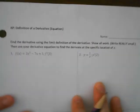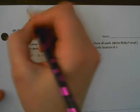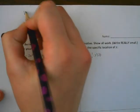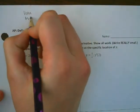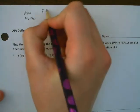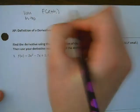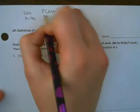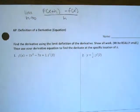At the top, we're going to write: the limit as h approaches 0 of f(x+h) minus f(x), all over h.